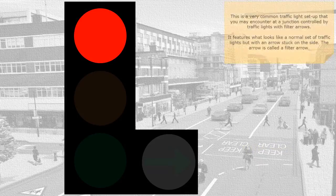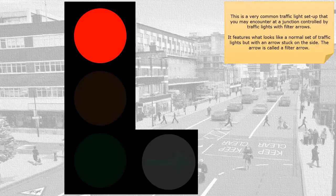This is a very common traffic light setup that you may encounter at a junction controlled by traffic lights with filter arrows. It features what looks like a normal set of traffic lights, but with an arrow stuck on the side. The arrow is called a filter arrow.